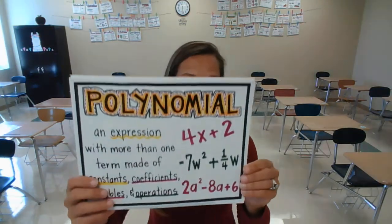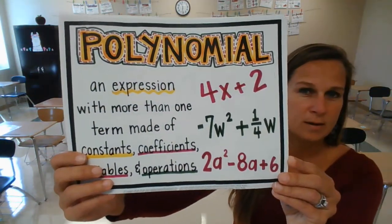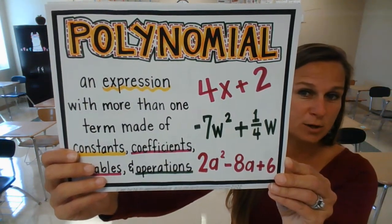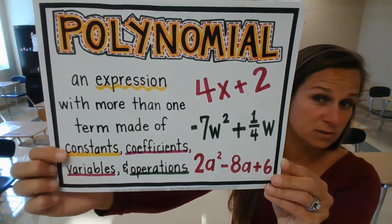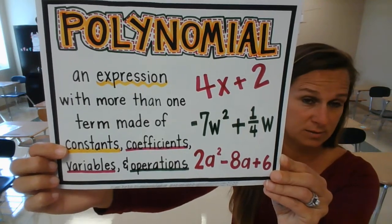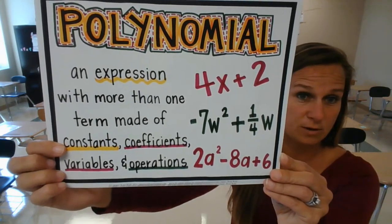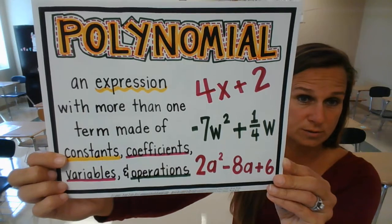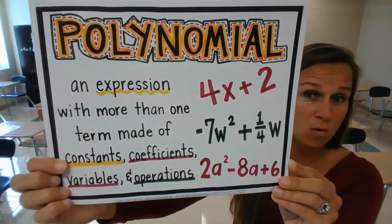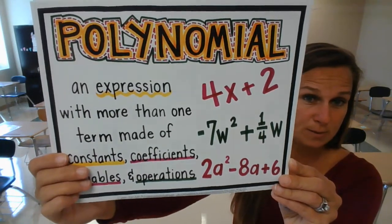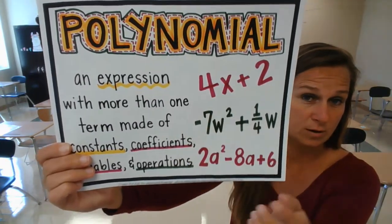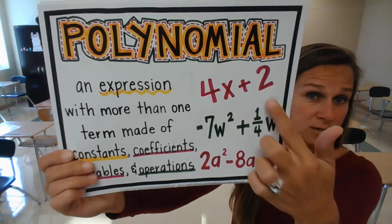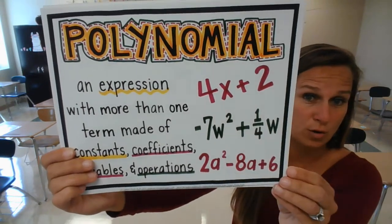So the first thing is the word polynomial. A polynomial is an expression with more than one term made of constants, coefficients, variables, and operations. There are some examples here on this paper of polynomials. Remember that a coefficient is the number multiplied by a variable — so in 4x, the coefficient would be 4 and the variable would be x. A constant is like the number 2 all by itself.